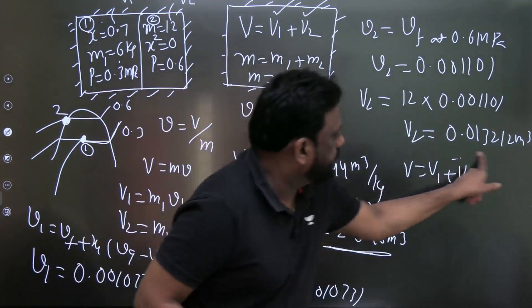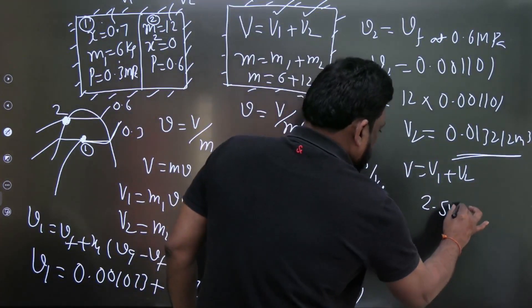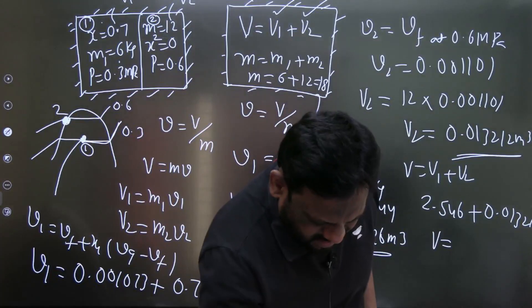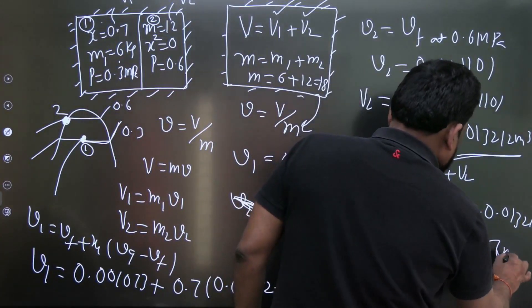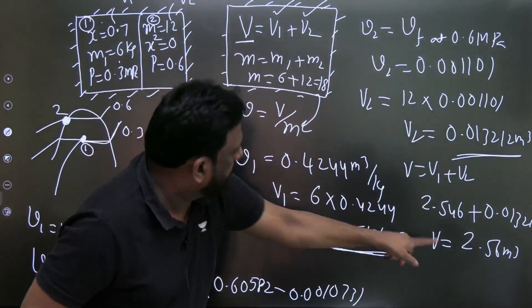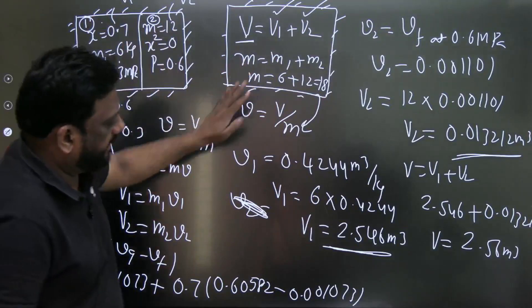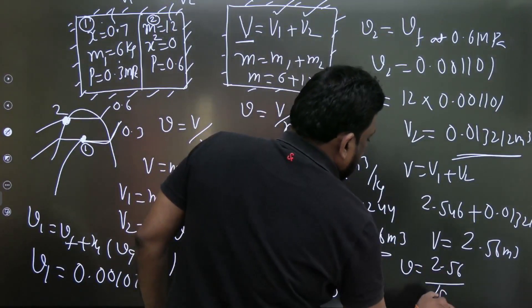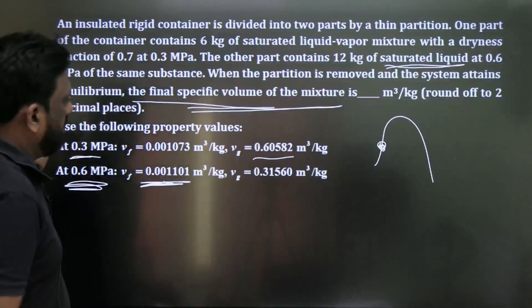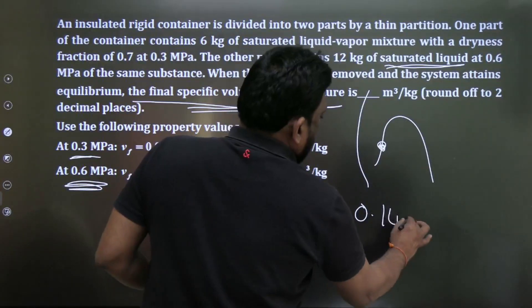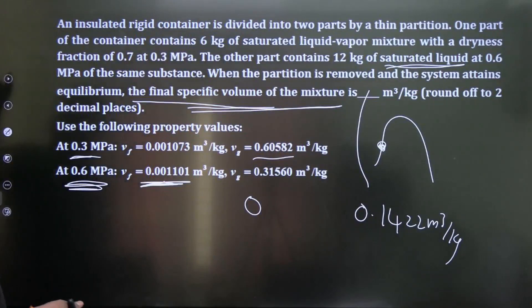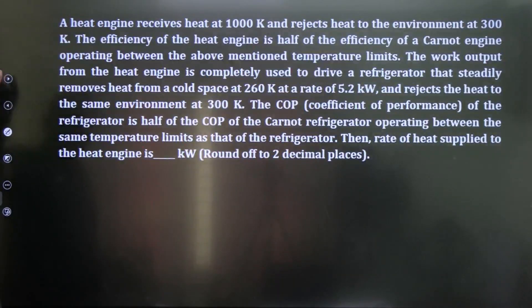Final specific volume = total volume / total mass = 2.56 / 18 = 0.1422 m³/kg. This is the answer.